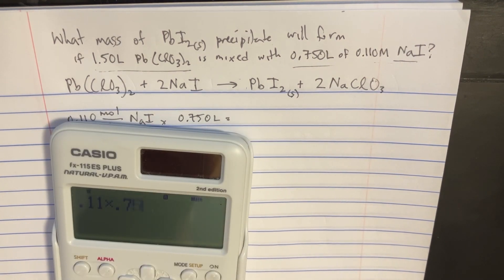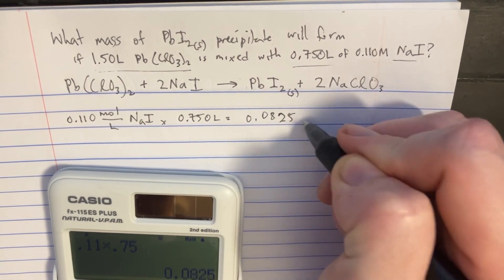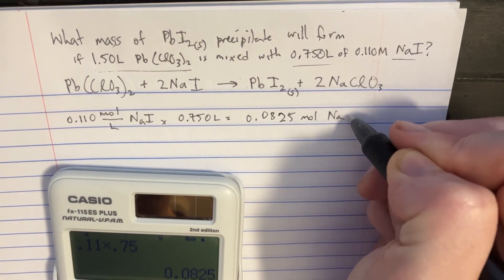Times 0.75, that's going to be equal to 0.0825 mole of NaI.